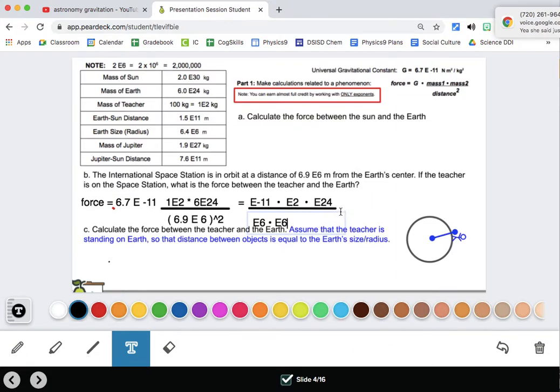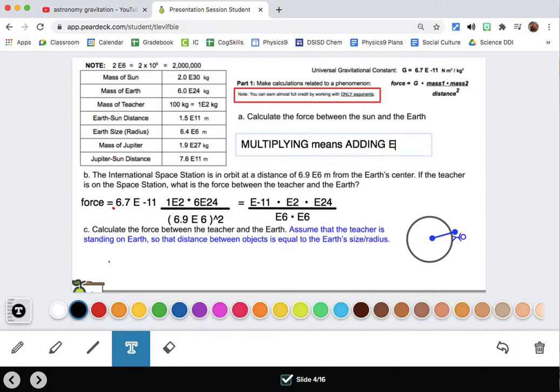We can figure out approximately how big or how small this number is by just dealing with the e numbers. I'm going to simplify this as my first step. We have e-11 times e2 times e24 divided by e6 times e6. I'm showing that by just multiplying it together on the bottom of the fraction here. We're trying to do this only exponents part first, and then we'll see what to do with that afterwards. Now I'm just going to multiply these exponents together. This is really important. Whenever you're multiplying exponents, you are actually going to add them. So multiplying means adding exponents. Anything that you see with an e or times 10 to the means that when you're multiplying, you add the numbers together. And when you're dividing, you subtract.